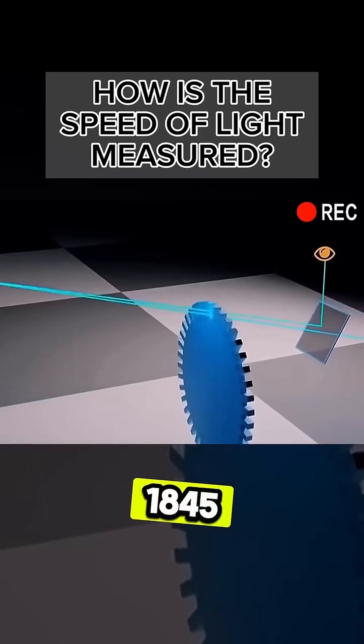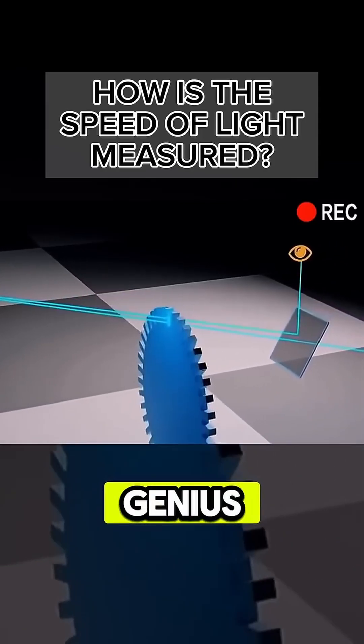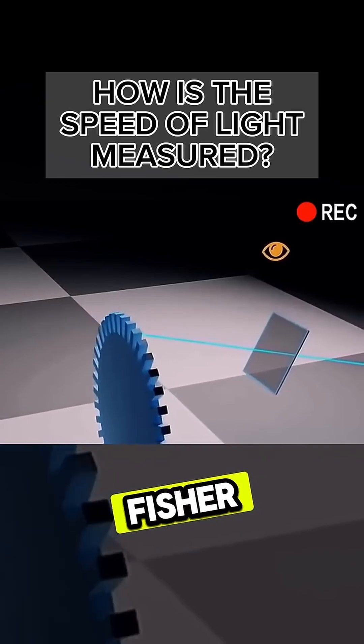The man who measured the speed of light in 1845 was an absolute genius. He was the French physicist Fizeau. Let's see how he did it.